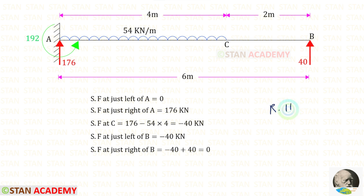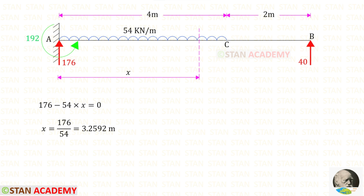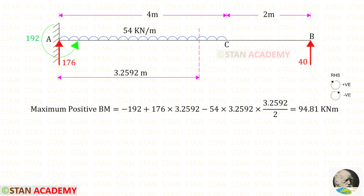Now using the right hand side rule, we can find the shear force values. Here you can see the shear force diagram. At this point, the shear force becomes 0, and at this point there will be maximum positive bending moment. Let us make a section at a distance x from point A. We know that the shear force in this section is 0, and using that concept we can find x.